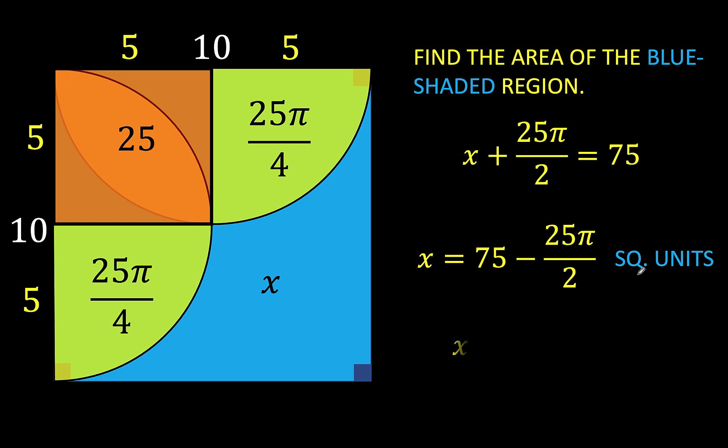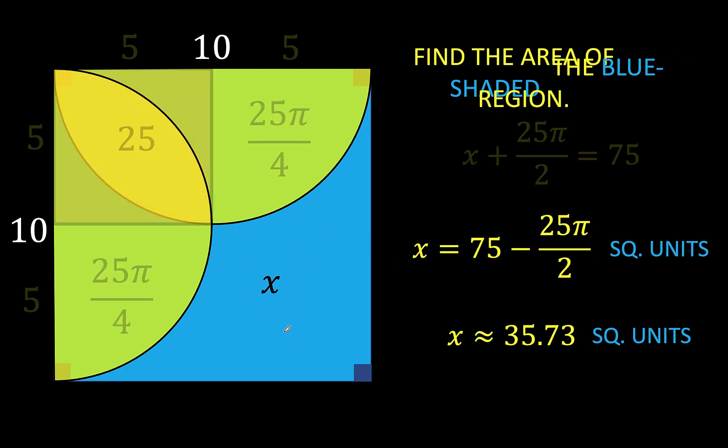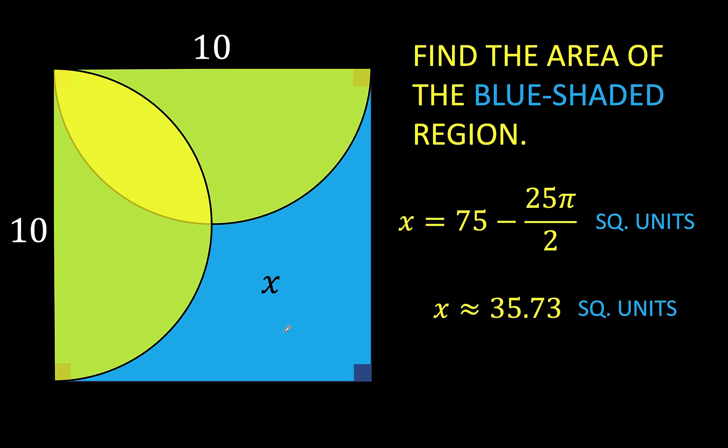Or approximately 35.73 square units. That is the value of x, which is the area of the blue shaded region that we would like to find. Therefore, for our final answer, the area of the blue shaded region is approximately 35.73 square units.